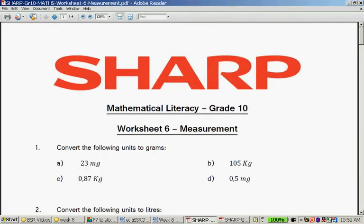Measurement. The reason why we are using Grade 10 worksheets here in Grade 11 is some of the work only occurs in Grade 11, especially Fahrenheit and degrees Celsius, but a wonderful worksheet to use nevertheless. The first question: convert the following units into grams. 23 milligrams, 105 kilograms, 0.85 kilograms and 0.5 milligrams.